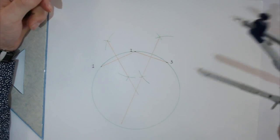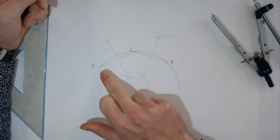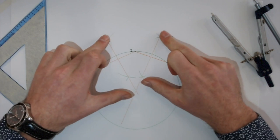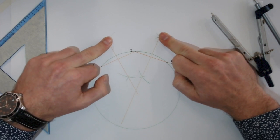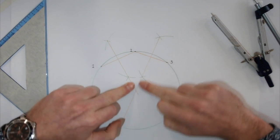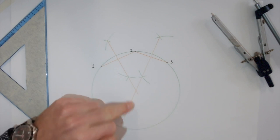What was our task? To construct a circle through all three points. We've done that by joining all points, bisecting the lines, and placing our compass where the two perpendicular bisectors intersect, then drawing the circle. Perfect.